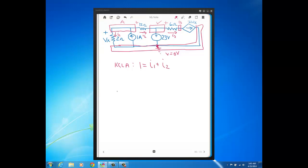Then KCL at node B will just be I3 equal to 2Vx.